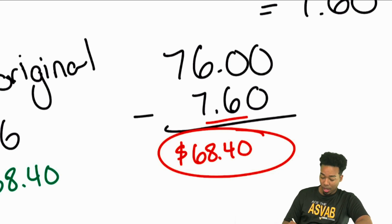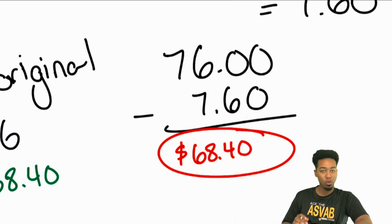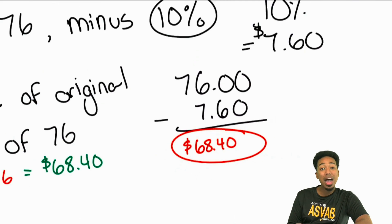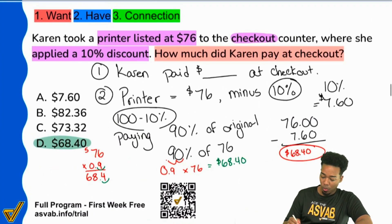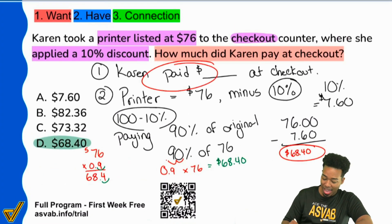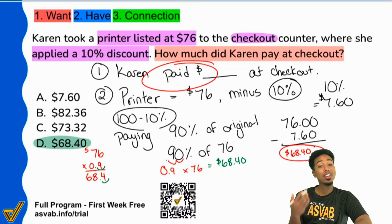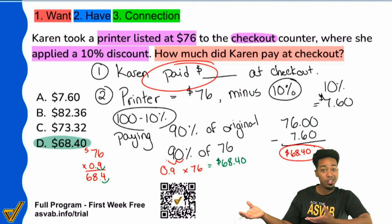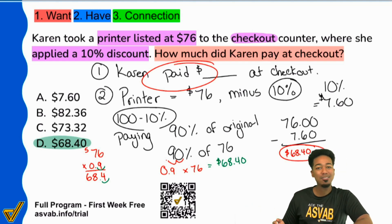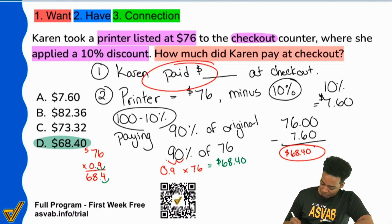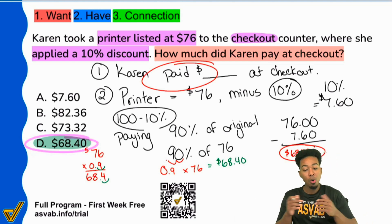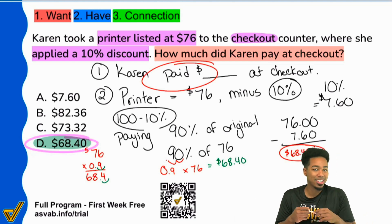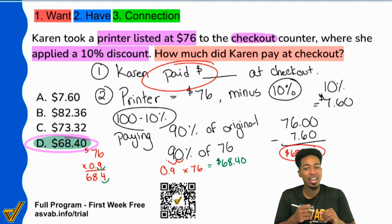If you got $7.60 as your answer, that is incorrect — because that is the amount of the discount, not what Karen paid at checkout. So be very careful. Understand what you're looking for so you don't get tricked into thinking the first thing you calculated is the answer. That's how we get to the answer in multiple ways.